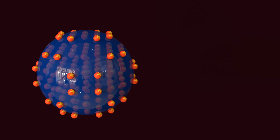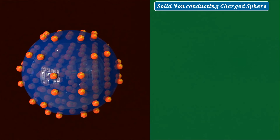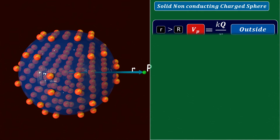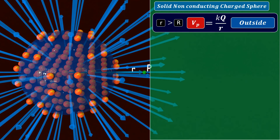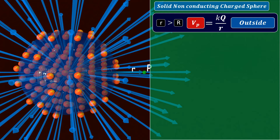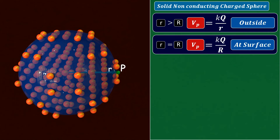Now it's time to determine the electric potential for a solid non-conducting sphere, where charges are uniformly distributed throughout the volume. The electric potential outside the charged sphere gives the same result as the previous case, because here too the electric field is radially outward, appearing to come from the center, and we measure the distance from the center. Similarly, the electric potential on the surface will be kq/R. However, for a charged sphere where charges are distributed throughout its volume, the inside electric potential will be different, because charges are also present inside the sphere, so the electric field will not be zero inside.